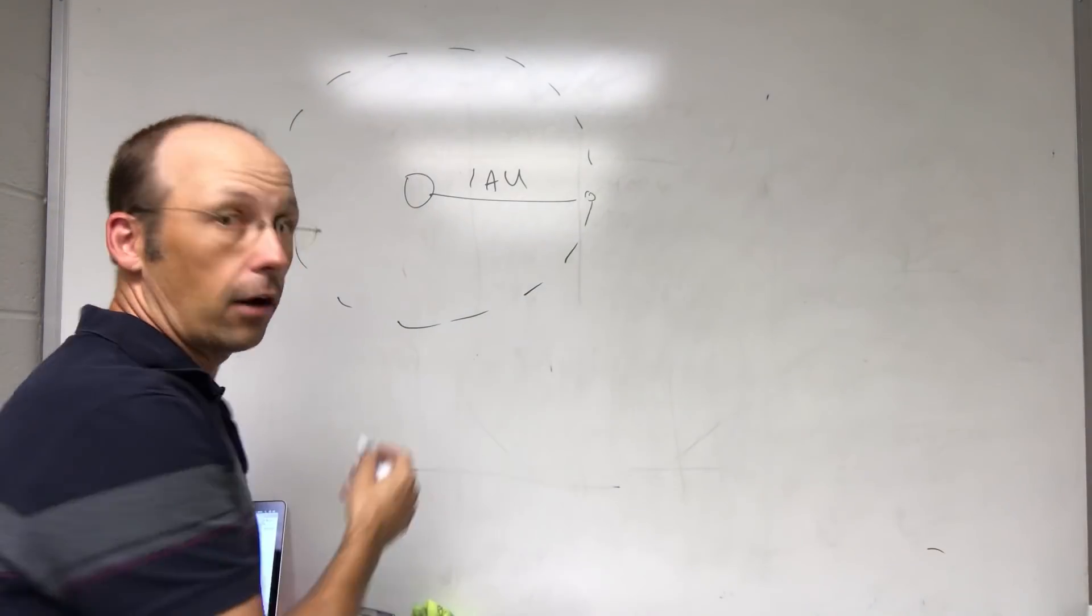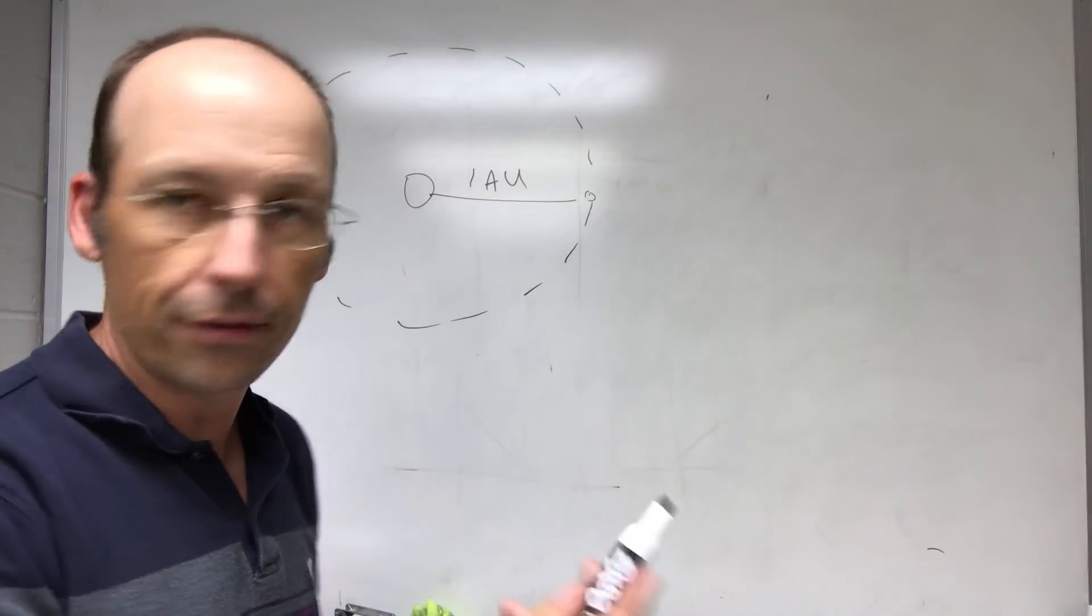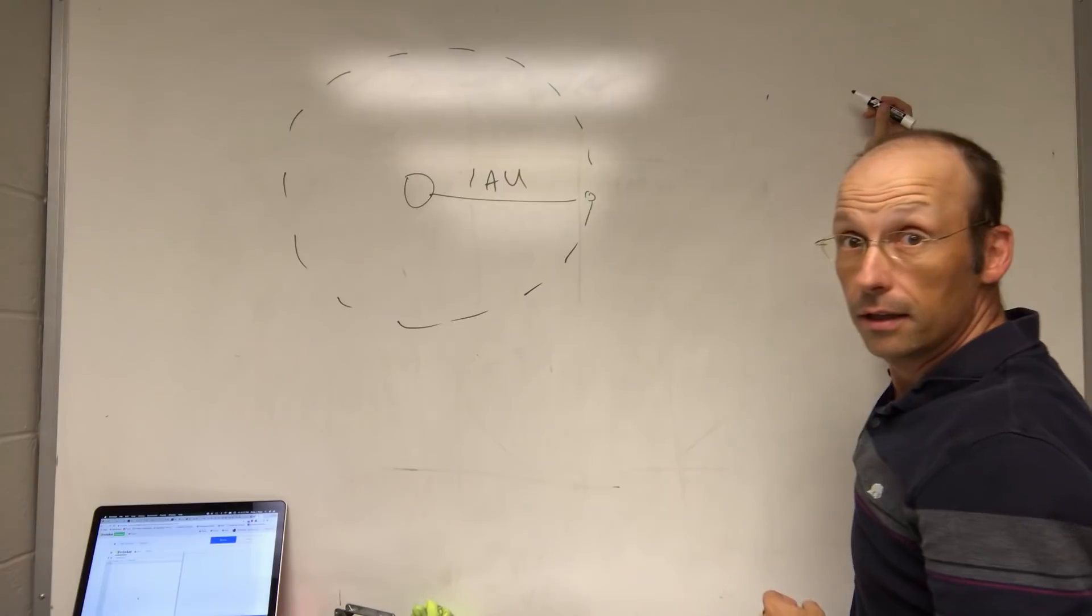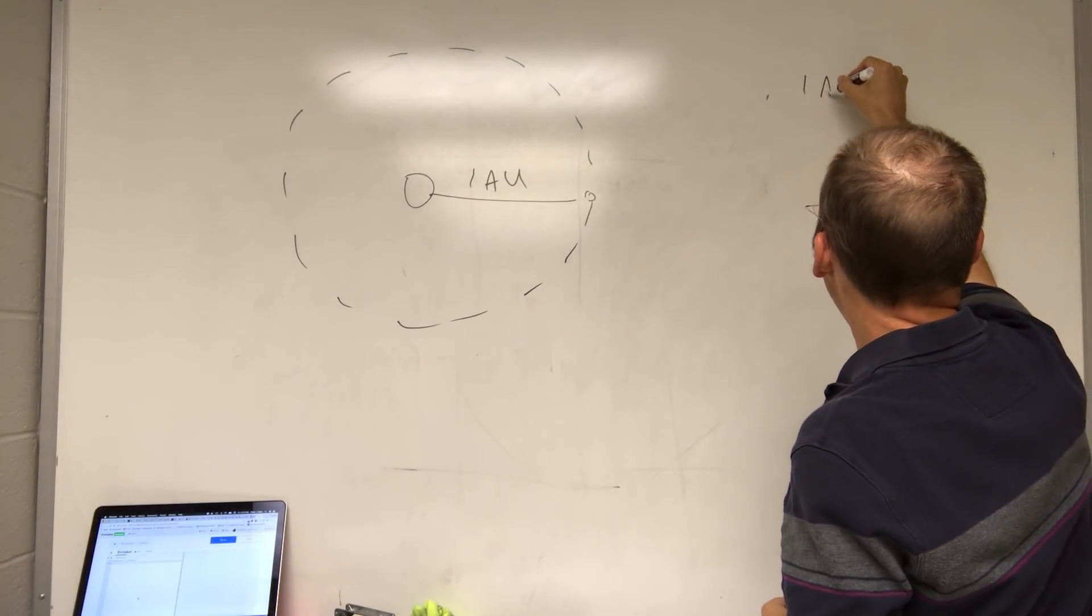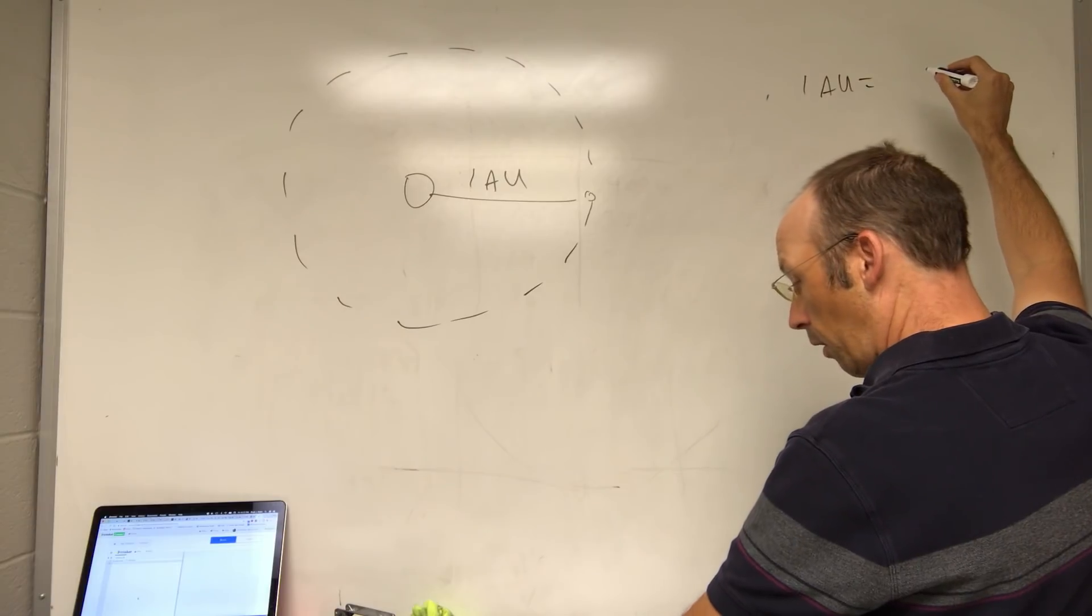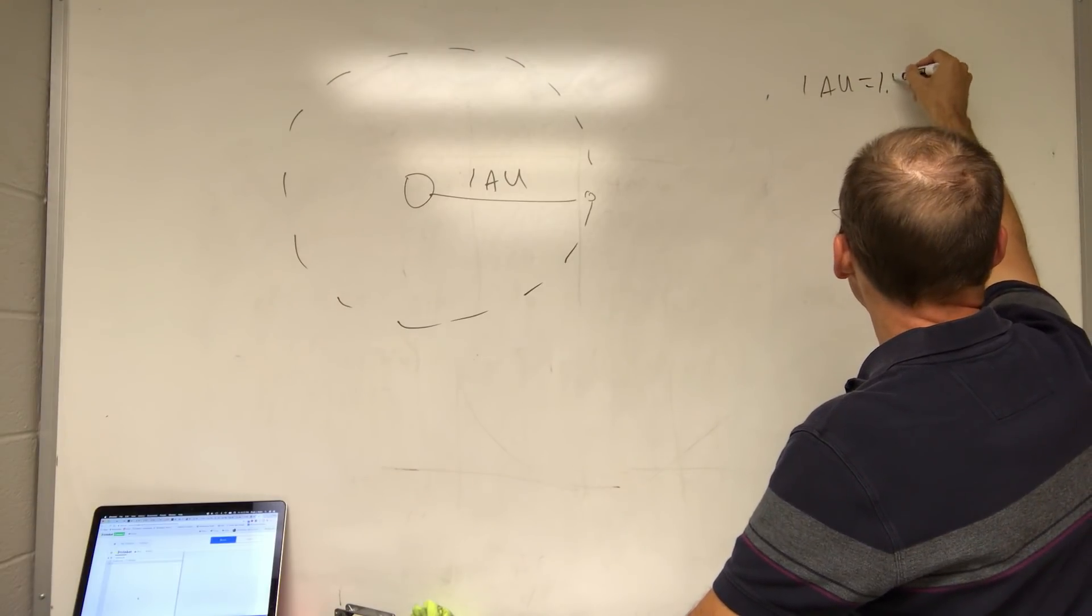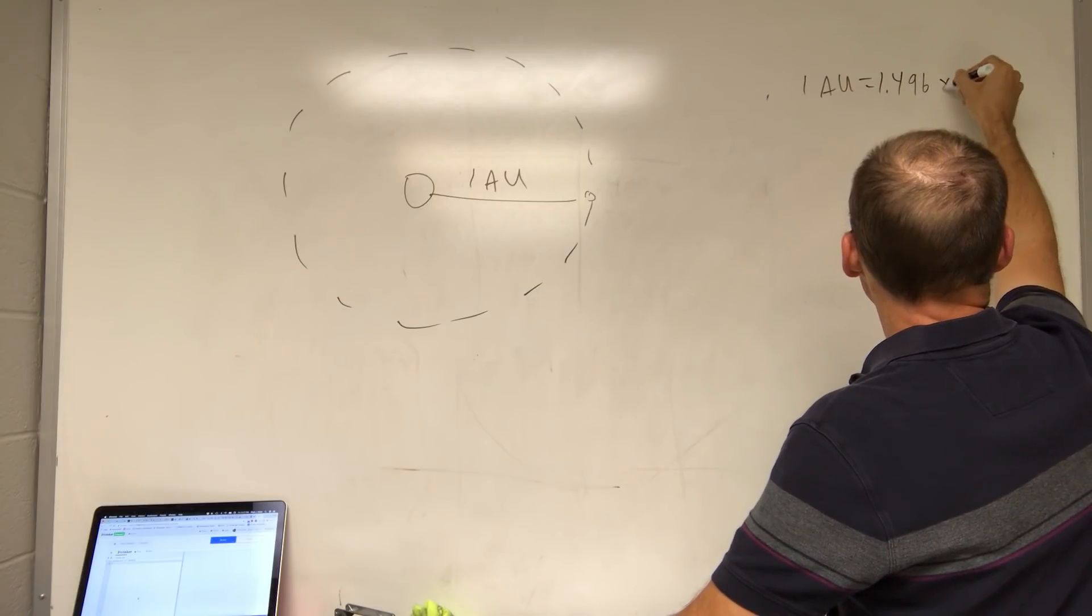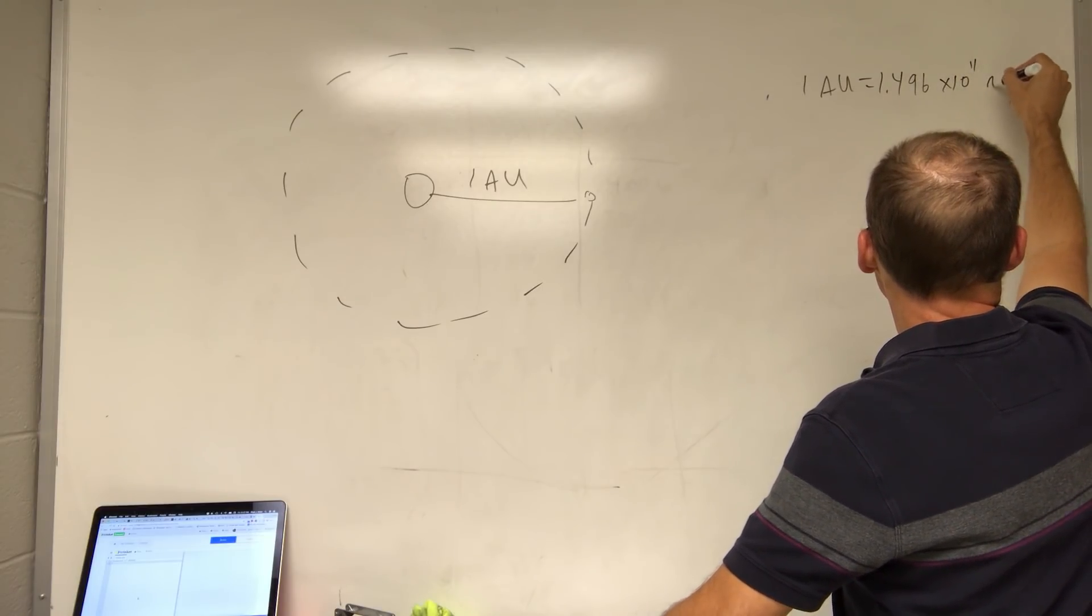So I don't know it off the top of my head, no one knows these things, but I can write down, I'll write it up here. Can you see if I write it right here? Yeah. 1 AU equals 1.496 times 10 to the 11th meters.